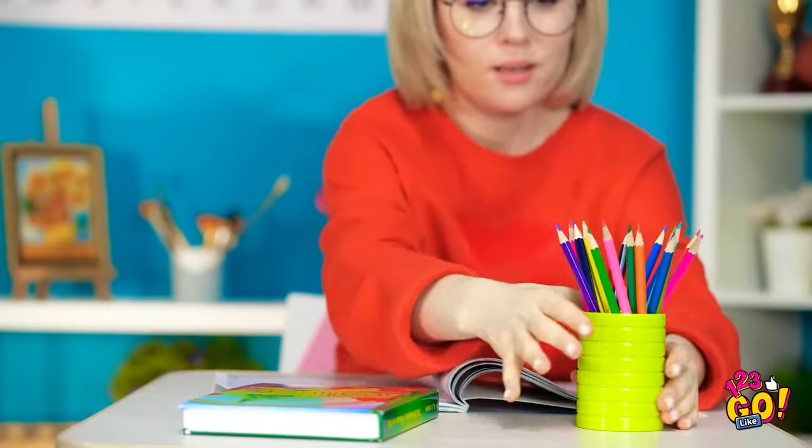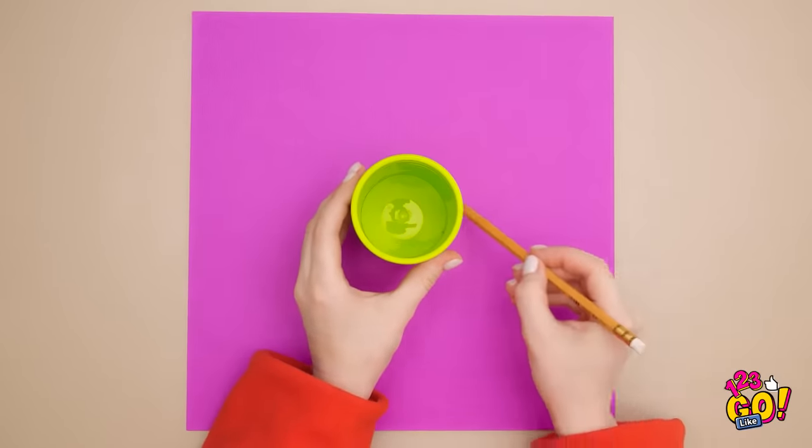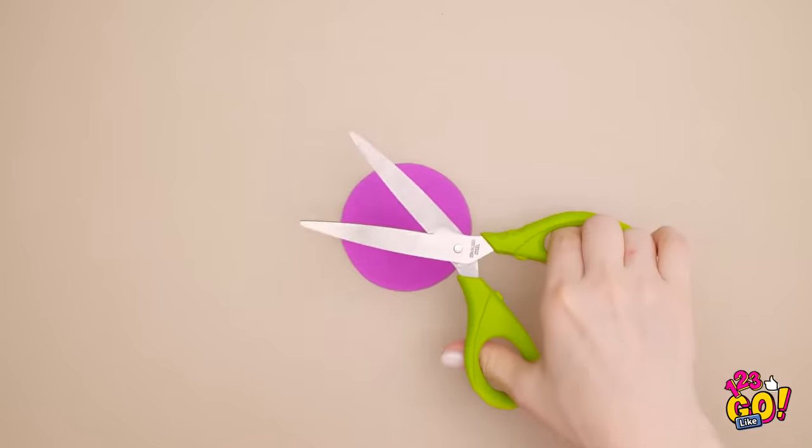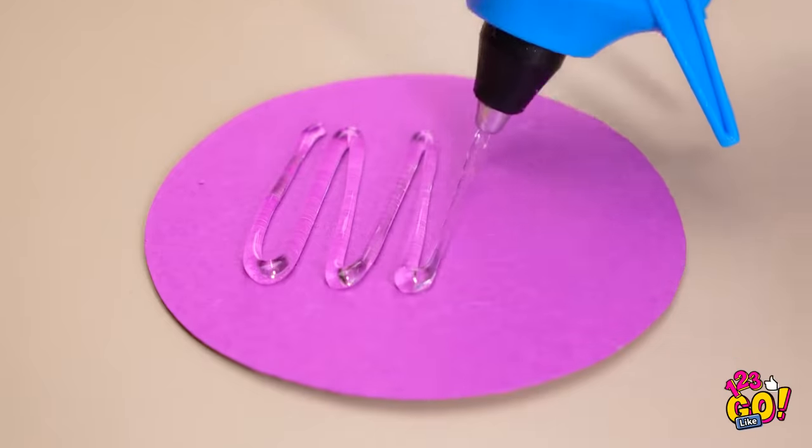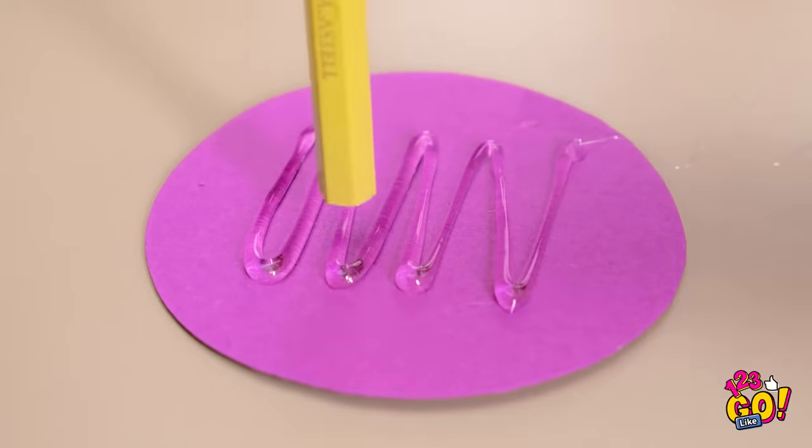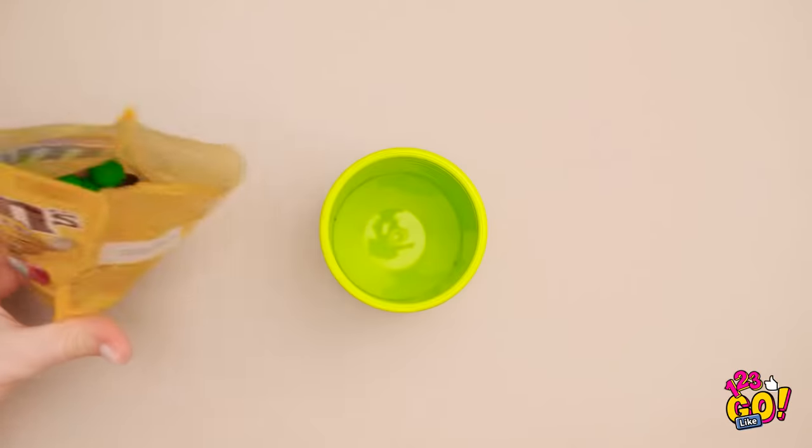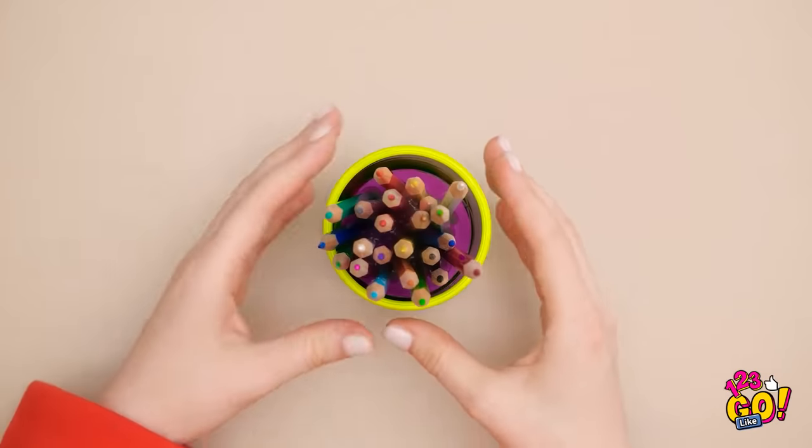Wait a minute. Why didn't I think of this before? I have the best idea ever! Start with a pencil can like this. Then trace its bottom. Time to cut that sucker out! Put hot glue in the middle of the circle. A zigzag pattern works best. Then stick your pencils on, bottoms down. Perfect! Now for the pencil can.